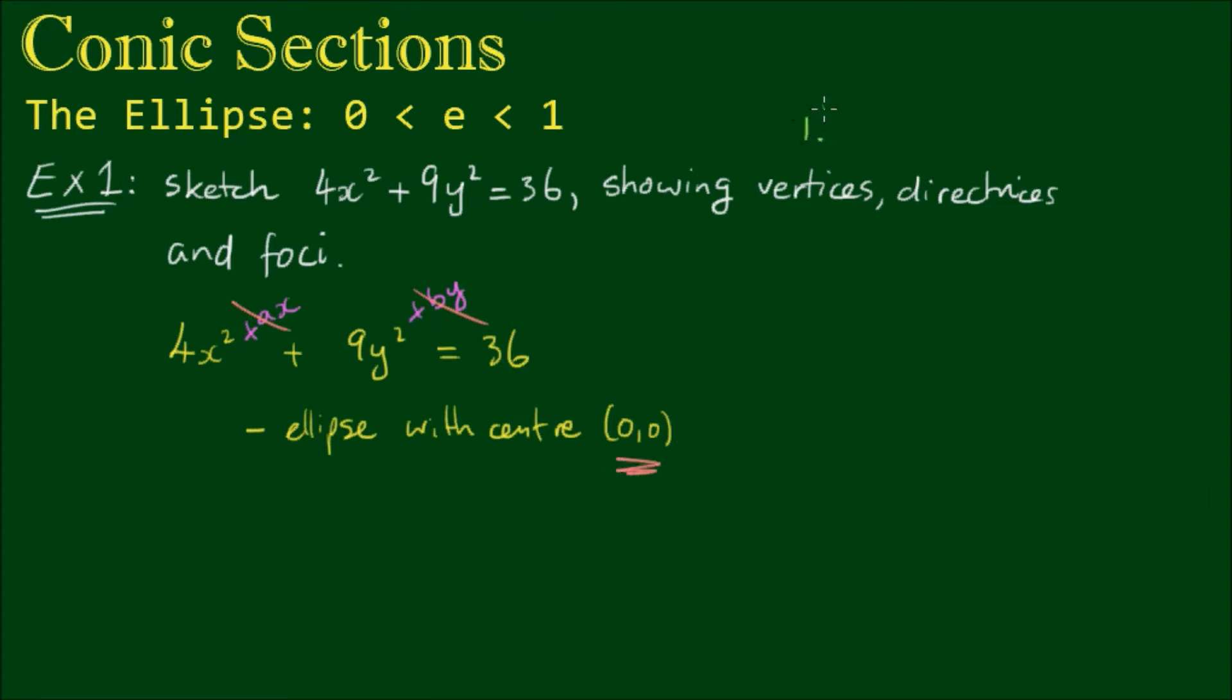Now for the first activity, to show the vertices, we need to get this equation into standard form which is x² on a² plus y² on b² equals 1. So if we divide both sides of this equation by 36, on the right hand side, 36 divided by 36 equals 1.